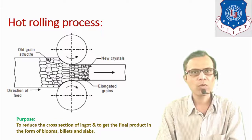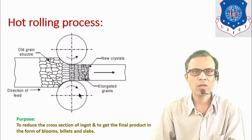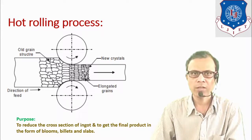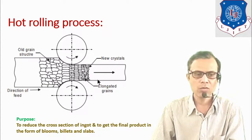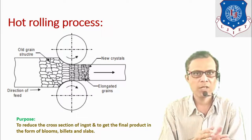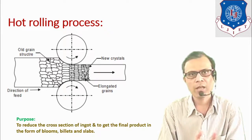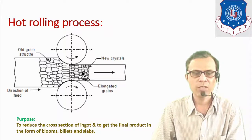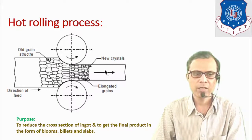Let's see the hot rolling process. The raw material is rolled between two rolls rotating in opposite directions to each other. In the diagram, the upper roll rotates anticlockwise and the lower roll rotates clockwise, in the direction of feed. The raw material is passed between these two continuously rotating rolls; by squeezing action, the grain structure is elongated. When the material comes out from the rolls at higher velocity, at higher temperature new crystals or grains form and the metal is deformed.